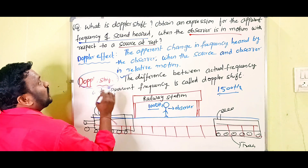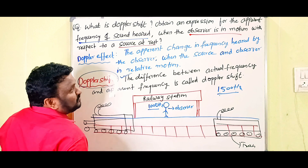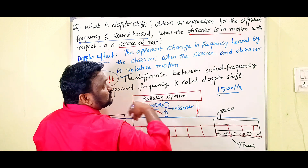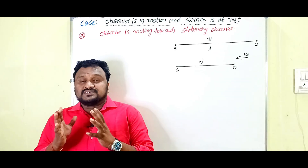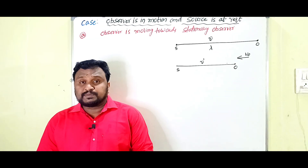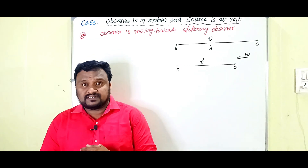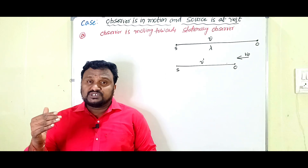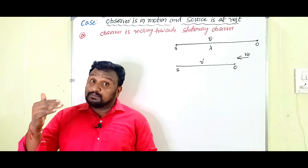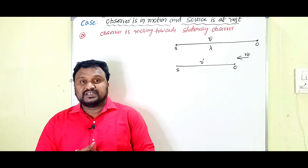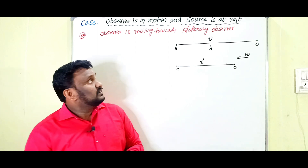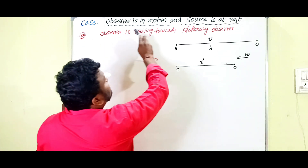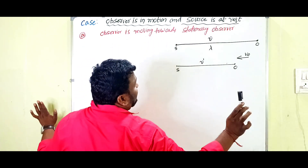So children, now we have to derive the expression for apparent frequency when the source is at rest and observer is in motion. The given situation is: source is at rest and observer is in motion — specifically, the observer is moving towards the stationary source.